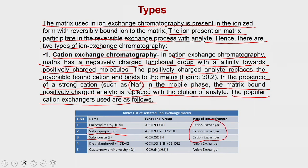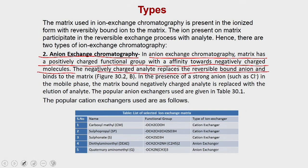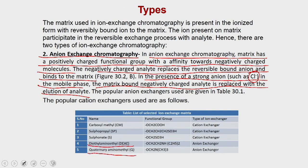In anion exchange chromatography, the matrix has a positively charged functional group with affinity towards negatively charged molecules. The negatively charged analyte replaces the reversibly bound anion and binds to the matrix. In the presence of a strong anion such as chloride in the mobile phase, the matrix-bound negatively charged analyte is replaced with elution of the analyte. Popular anion exchangers are DEAE Sepharose, quaternary amine, or MonoQ.